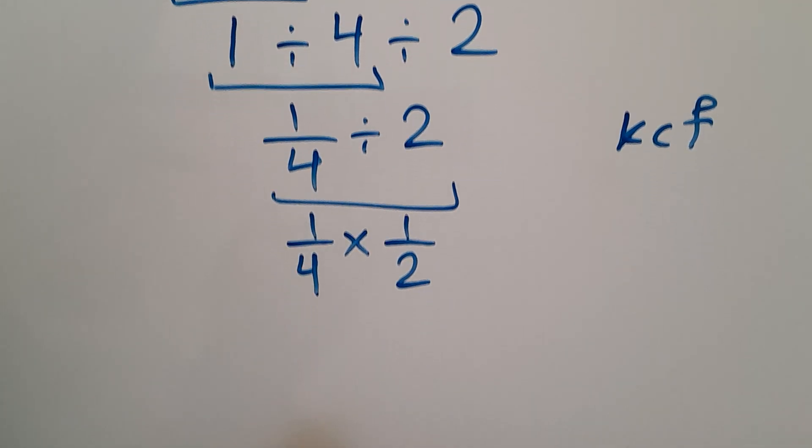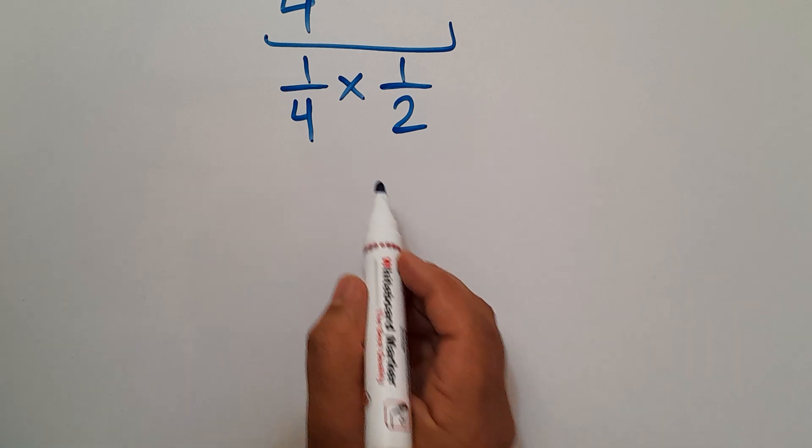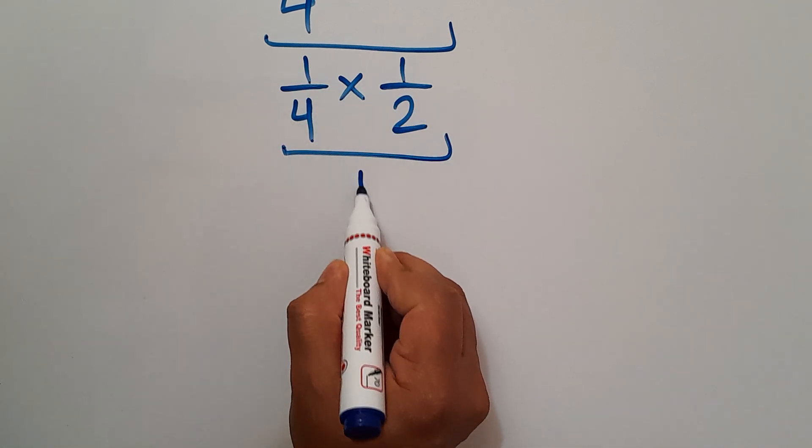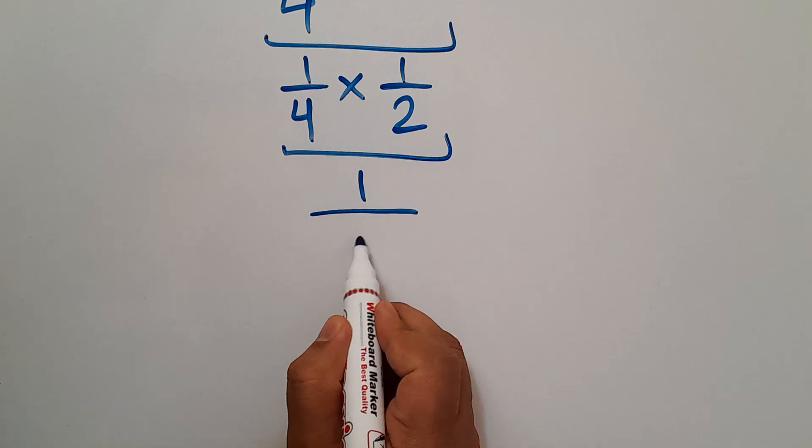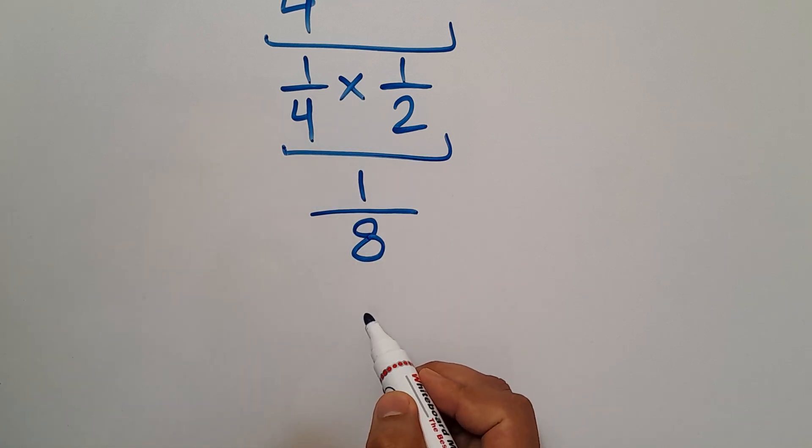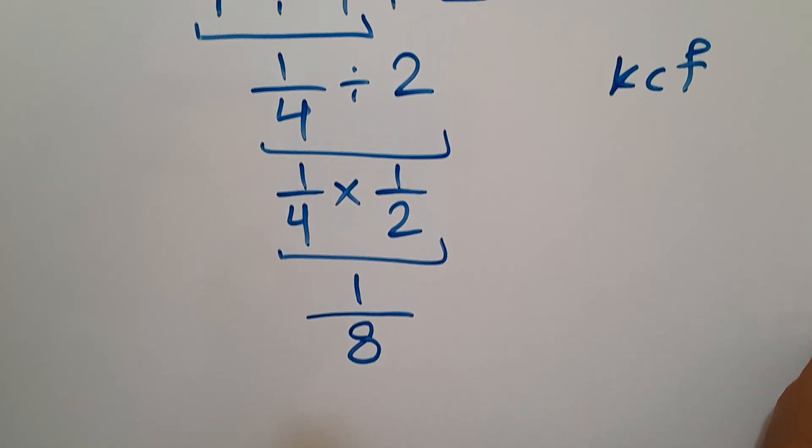Now, 1 times 1 gives us 1, over 4 times 2, which equals 8. So our final answer to this problem is 1 over 8.